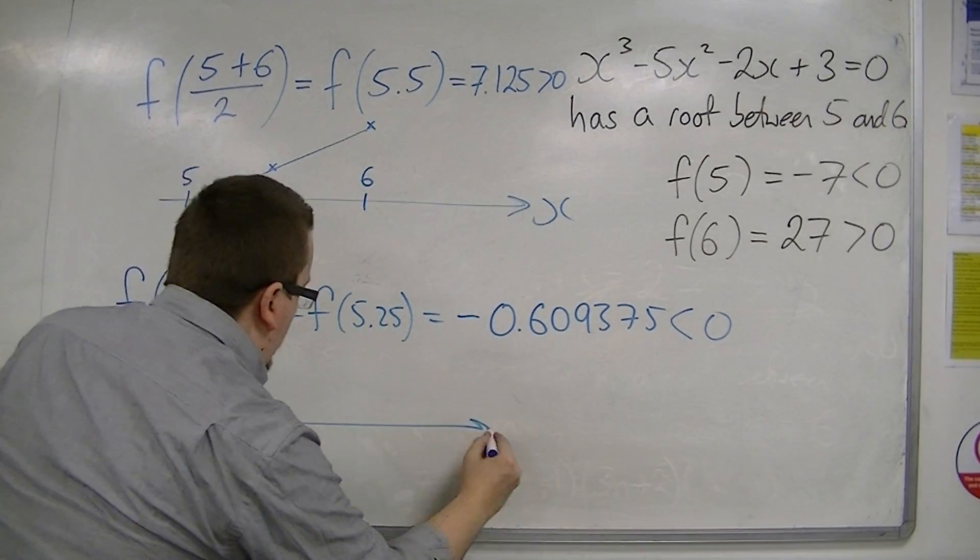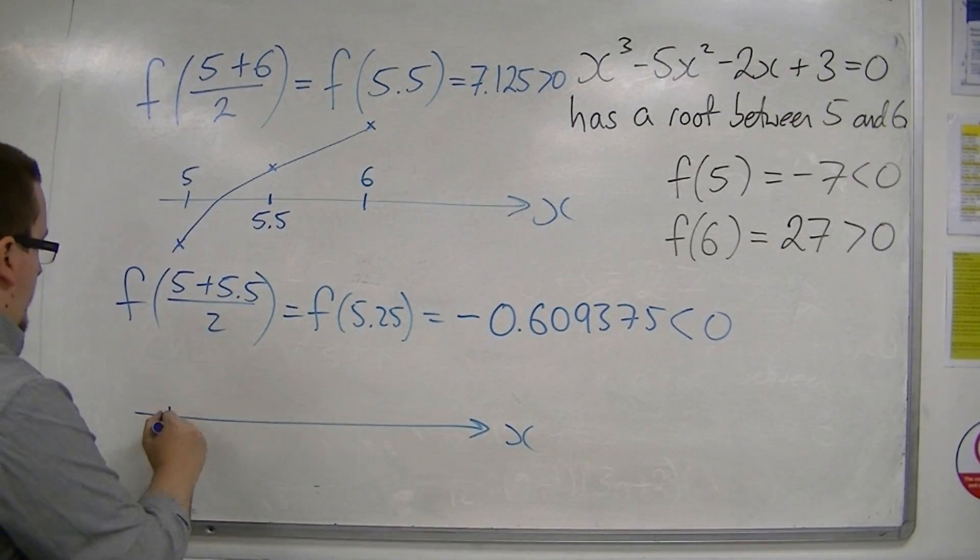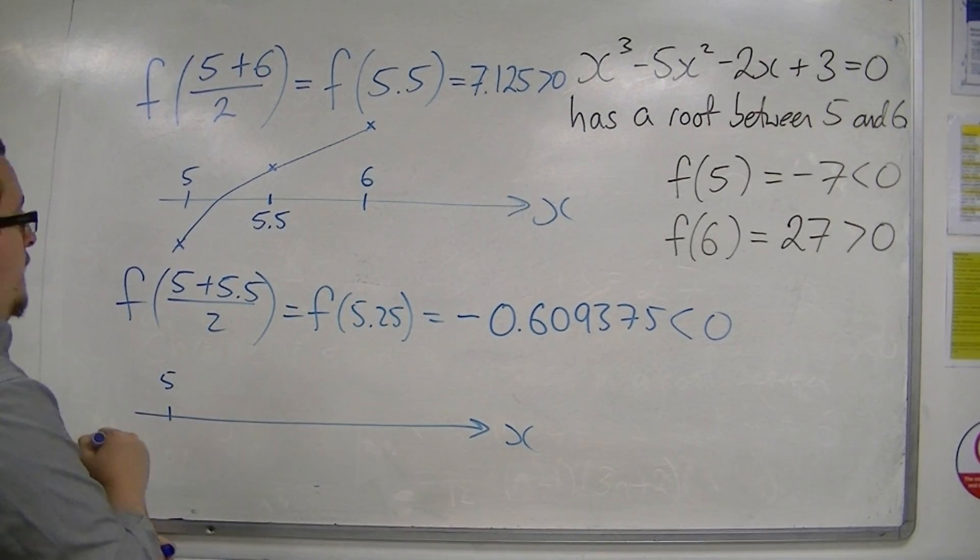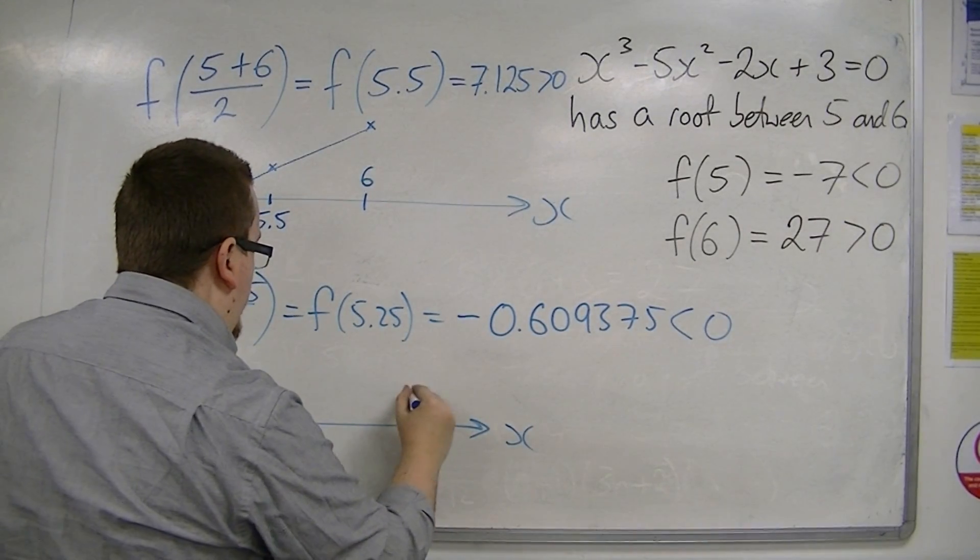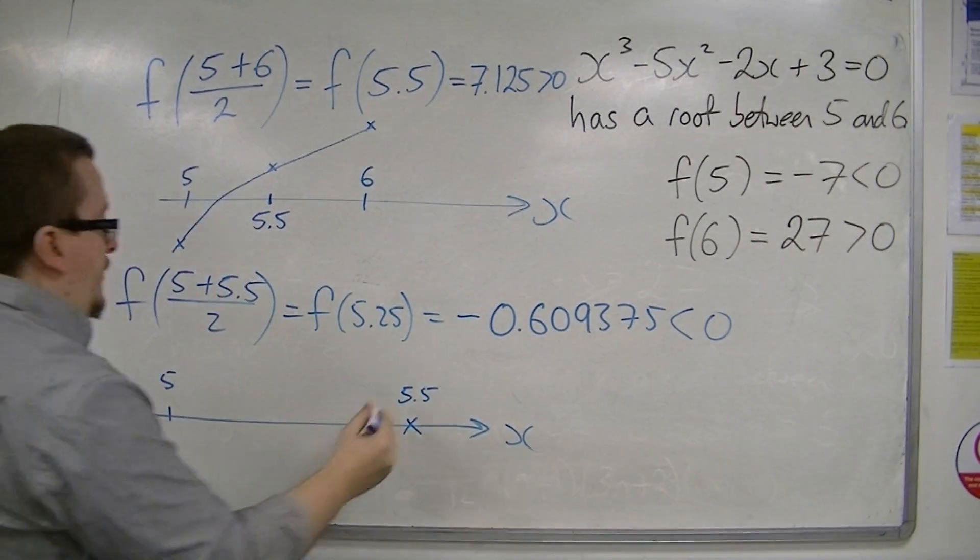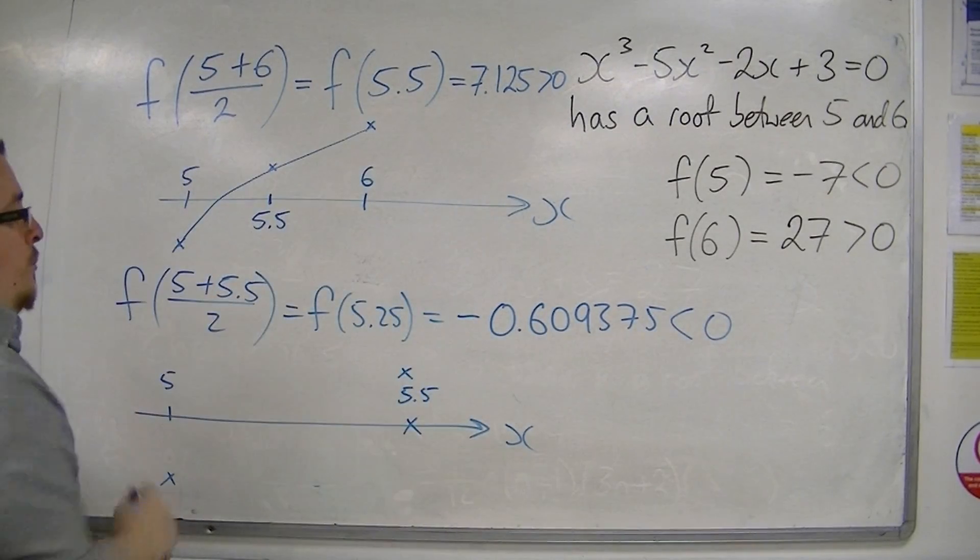So if I zoom in, I've been looking now at 5, which was negative at minus 7. And here's 5.5, which was positive at 7.125,